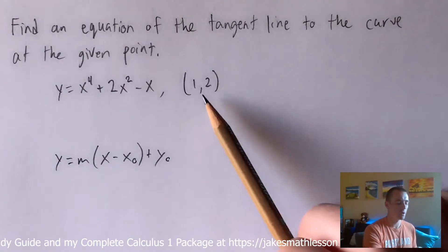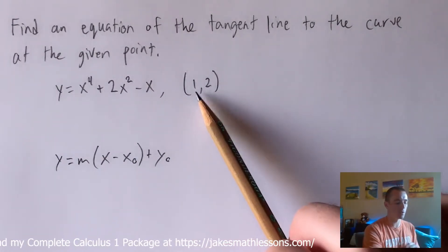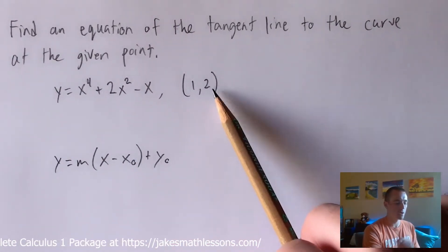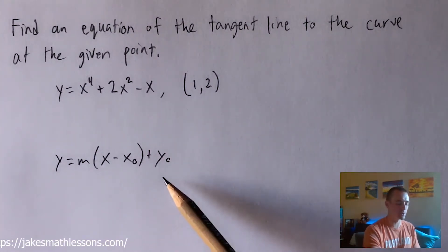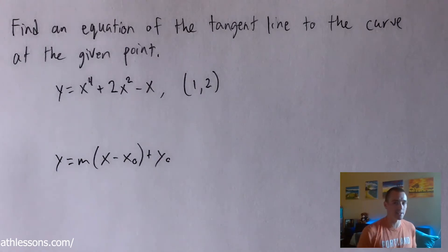So we know that this point 1, 2 it lies on this curve and we also know that it has to lie on this tangent line equation. Otherwise it's not a tangent line because it has to share a point in common with our function.